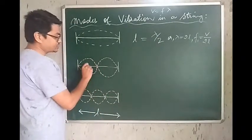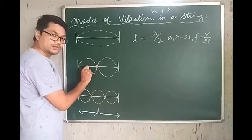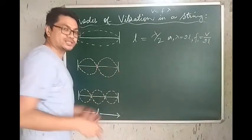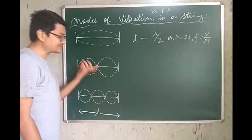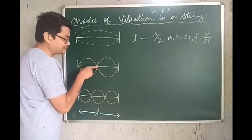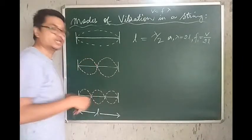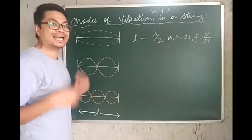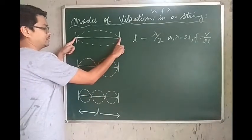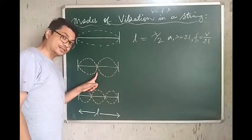If we pluck the string at one-fourth the length, this gives the second mode of vibration. The points where the wave appears to meet are called nodes, and the points where the waves are farthest apart are called antinodes. In the second mode, we have three nodes (including the two fixed ends) and one node at the center. For the second mode, L = λ, so lambda = L, and F2 = V/L = 2V/(2L). The third mode of vibration has two nodes at the center; L = 3λ/2, so lambda = 2L/3, and F3 = 3V/(2L).